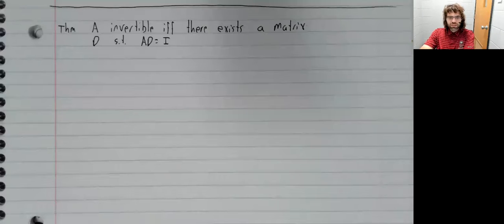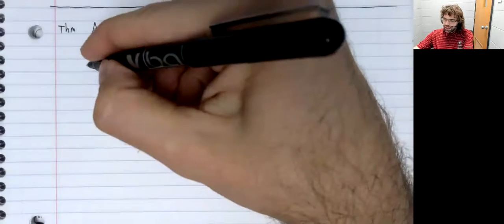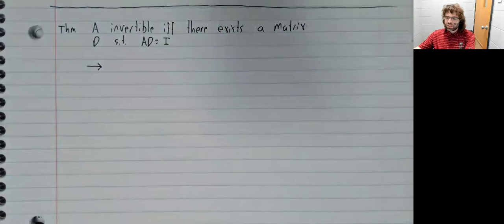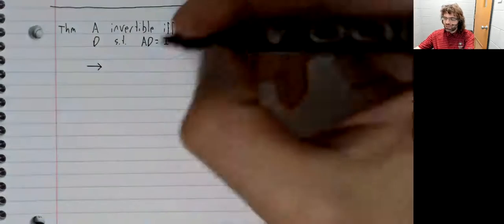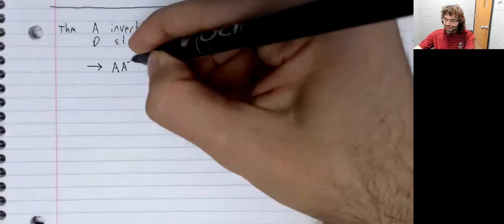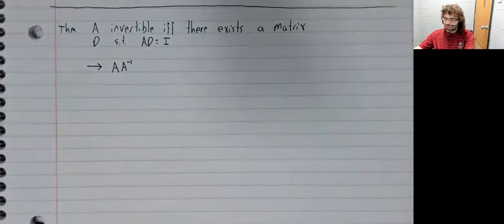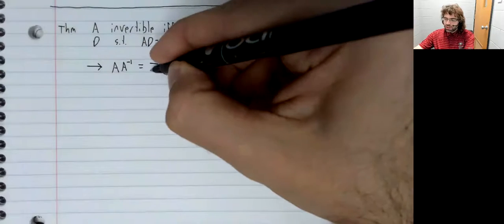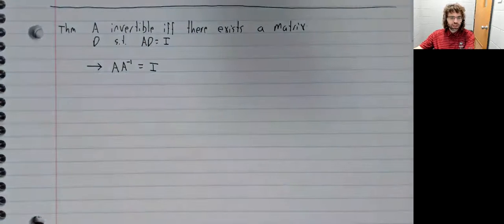The next theorem is very similar. And again, proving one of these directions is trivial. If A is invertible, then A inverse is a matrix D such that this product is I.